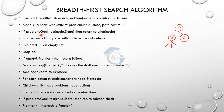If problem.goal_test on node.state returns true, then we return the solution node. If we reach the root node and it satisfies the goal test, the solution is returned. The frontier holds connected nodes that are further expanded.